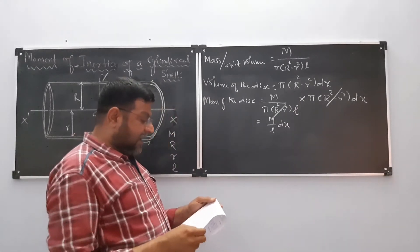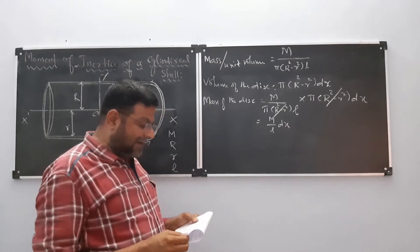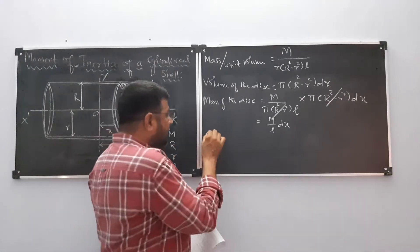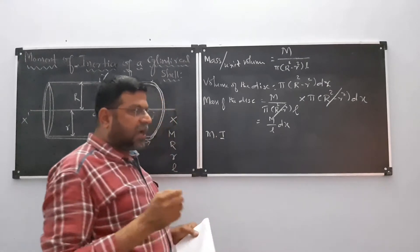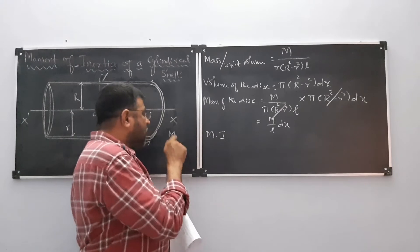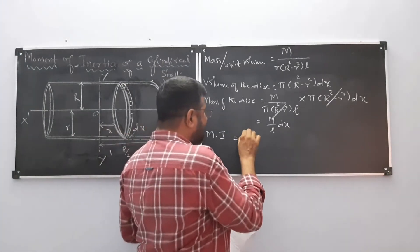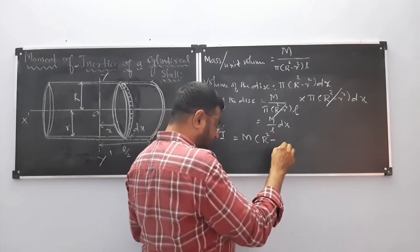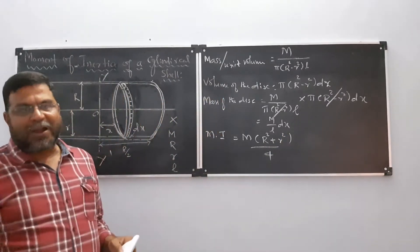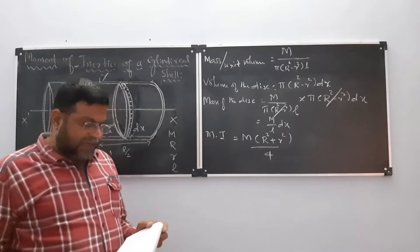Now the moment of inertia of the annular disc of external radius capital R and internal radius small r about its own diameter is given as: dI = (M/L)dx times (R² + r²)/4. Here M is the mass of the disc, capital R is the outer radius, and small r is the inner radius.